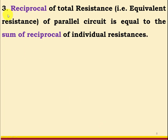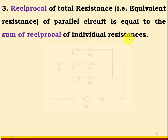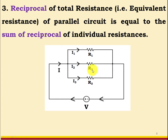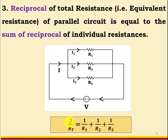Characteristic number three: the reciprocal of the total resistance, that is the equivalent resistance of a parallel circuit, is equal to the sum of the reciprocals of the individual resistances. So if we calculate the equivalent resistance of a parallel circuit where three resistors are in parallel, we can write: 1/R_T = 1/R1 + 1/R2 + 1/R3.